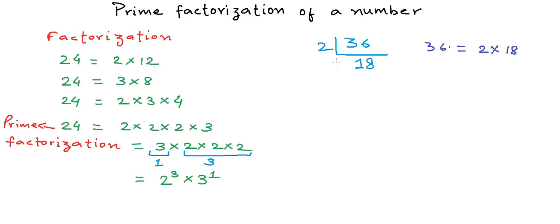Once again, what is the smallest number that can divide 18? Can we reduce 18 any further? Yes, we can. 2 can divide 18, and the quotient would be 9. If we pick up all the divisors and this last number along the horizontal line, multiplying them all gives us the actual number.